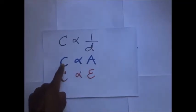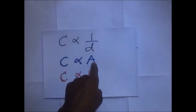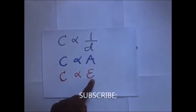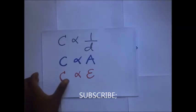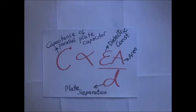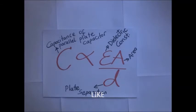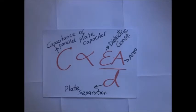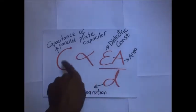Summarizing the three factors: the capacitance of a parallel plate capacitor is inversely proportional to the distance between the plates, directly proportional to the area of overlap between the plates, and directly proportional to the permittivity of the dielectric introduced between the plates. In our next video we shall look more into the capacitance of the parallel plate capacitor and derive this expression specifically.